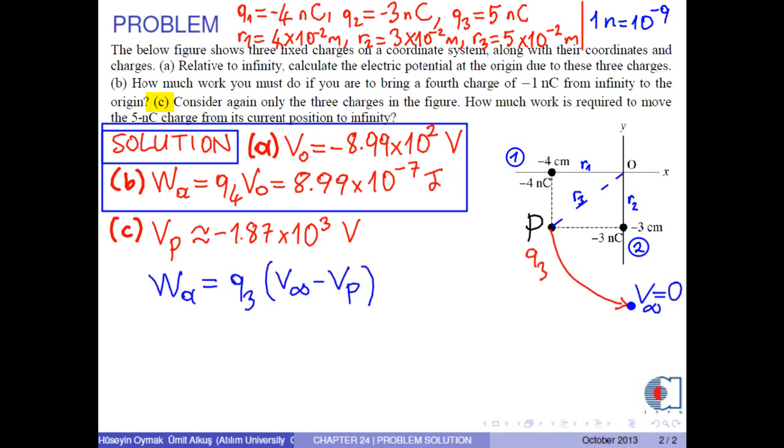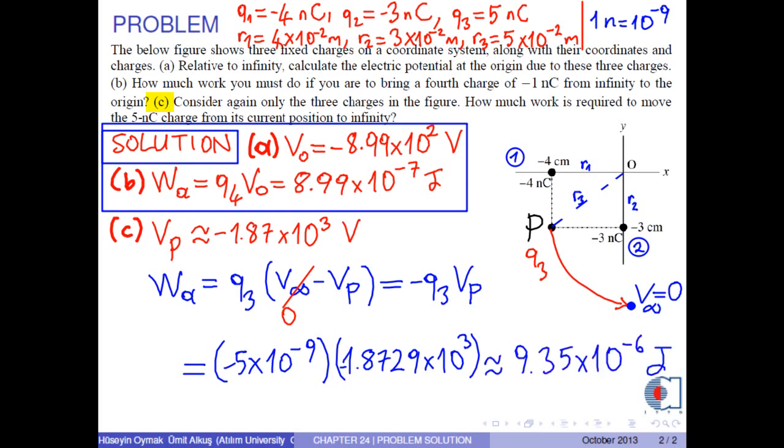Applied work has the formula: the charge Q3 times the potential at infinity minus the potential at point P. At infinity, the potential is zero. So, we obtain negative Q3 times VP. We put the numerical values into this formula to obtain approximately 9.35 times 10 to negative 6 joules.